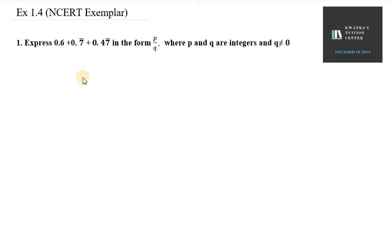Hello everyone, let's start with exercise 1.4 from the number system chapter, class 9th. Question number 1 says: Express 0.6 + 0.7 bar + 0.47 bar in the form of p/q where p and q are integers and q is not equal to 0. First, let's divide it into 3 parts.